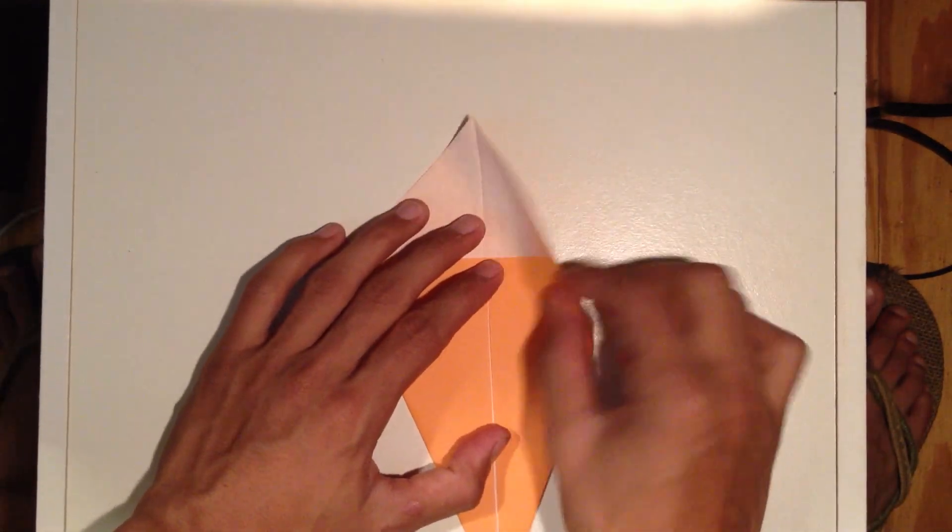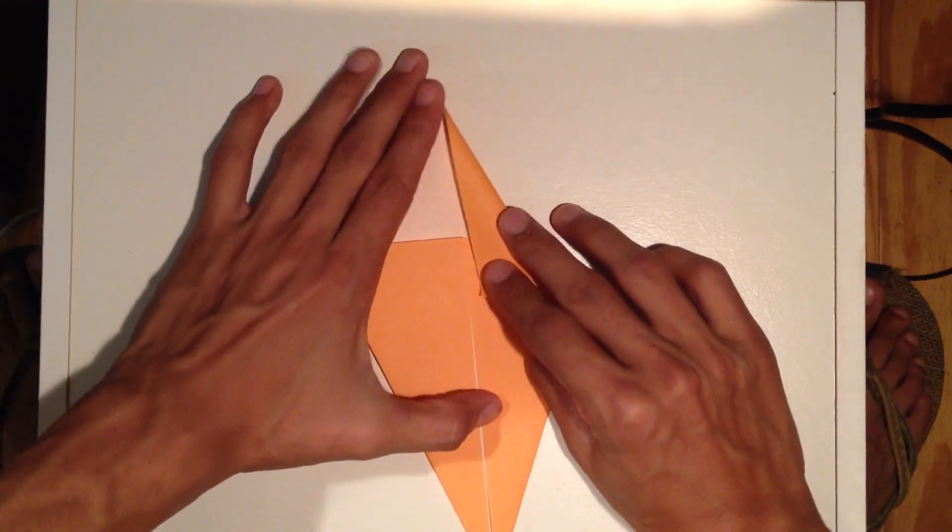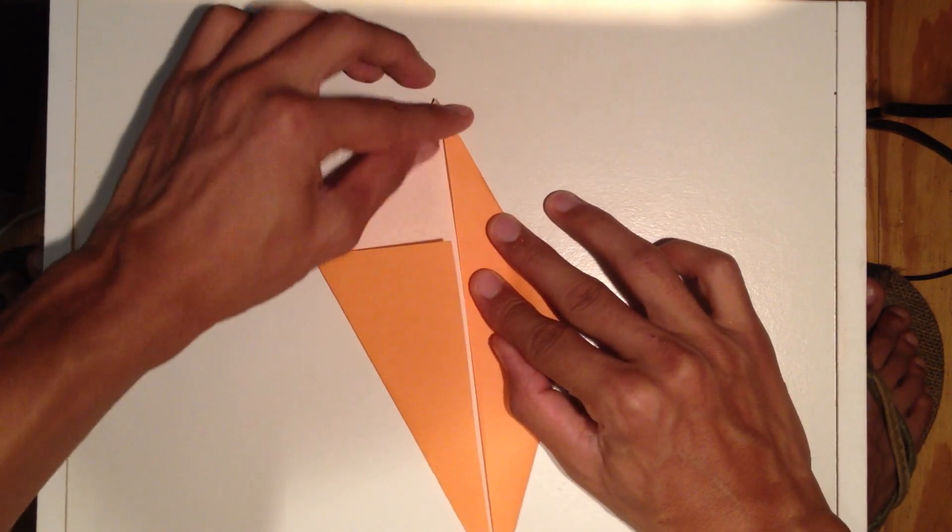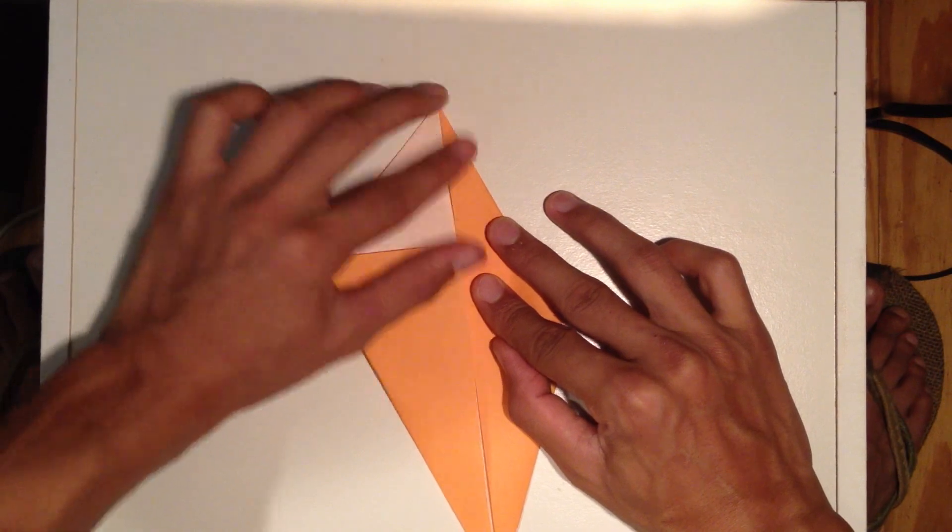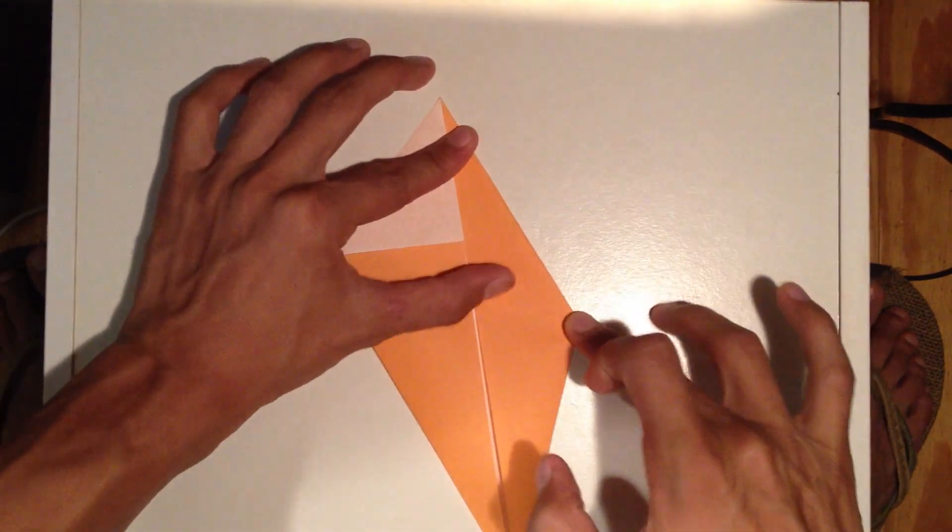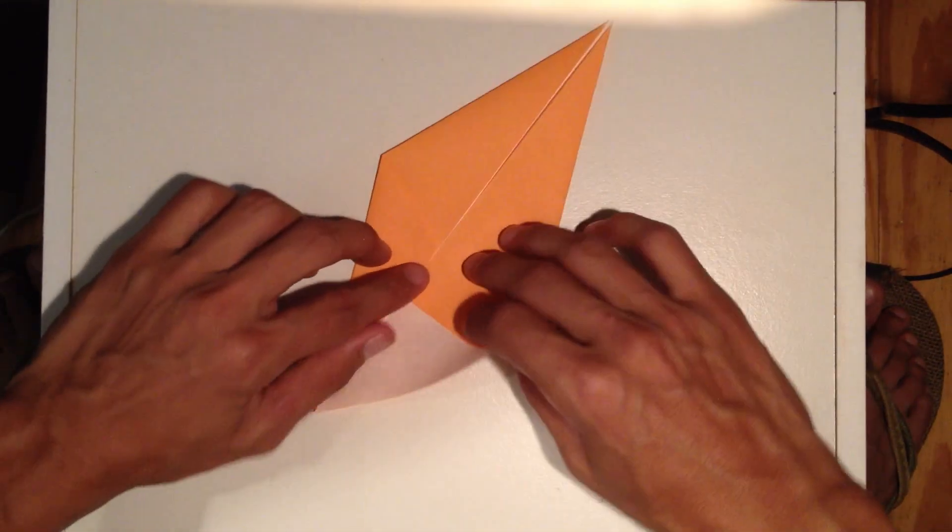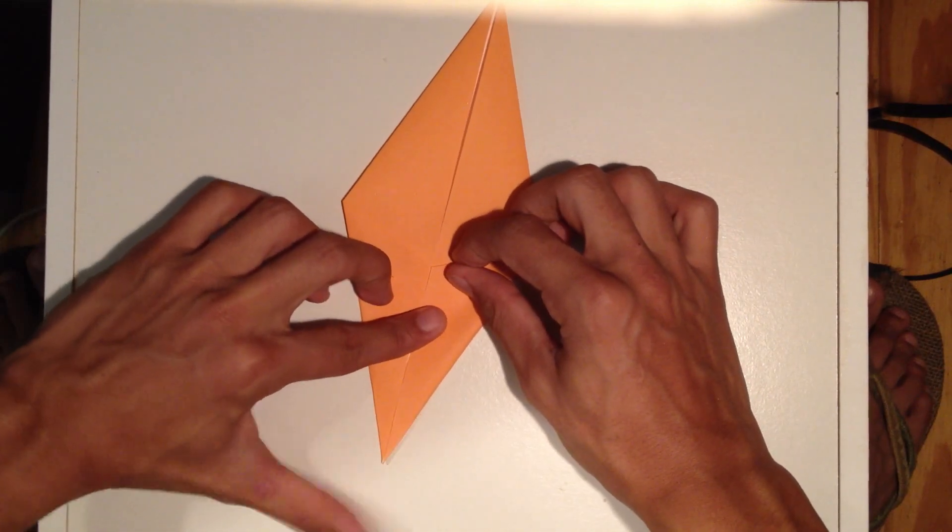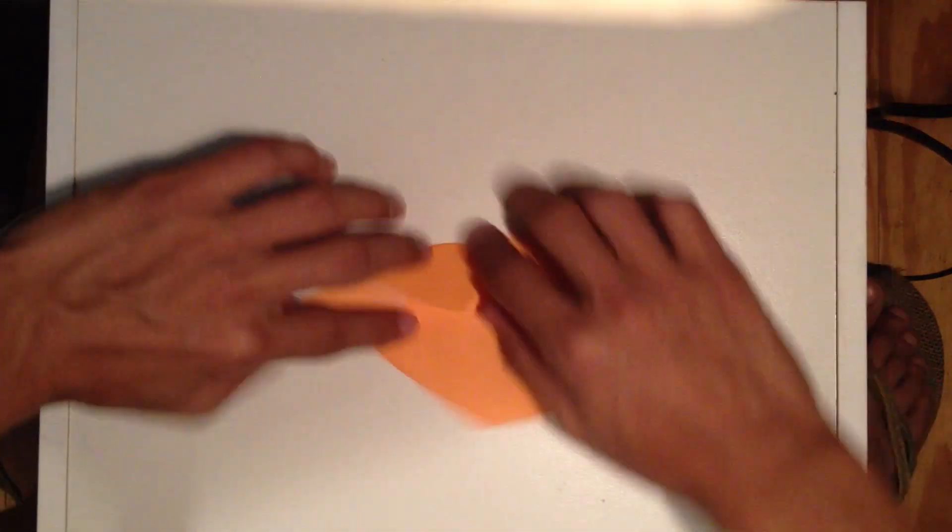Next thing we're going to do is take these flaps and do a similar thing, except towards the top. So I'm going to fold these in, same thing on both sides. There we go.